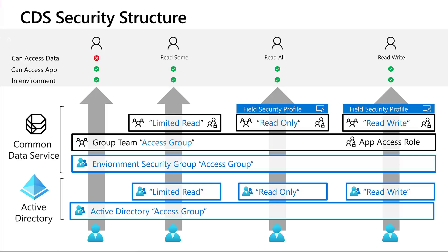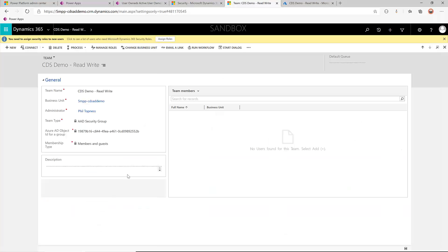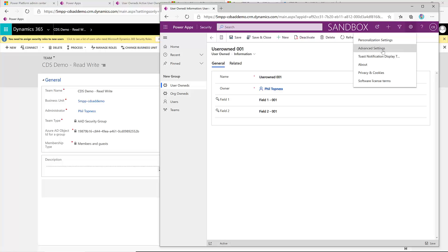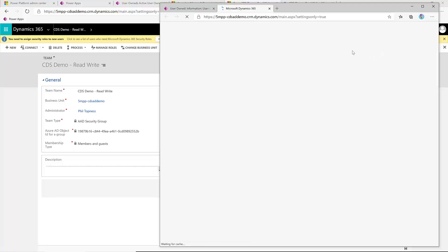By adding these members to different Azure Active Directory security groups, all that action is driven through the related group teams and their specific security roles, and in this case field security profiles also tied to those teams. This allows us to drive action on records and fields all through what's in Azure Active Directory. You can of course do the same from within CDS by creating teams directly. But for organizations that already have a process for managing Active Directory groups, this allows you to tie that management into CDS as well. One important thing: make sure your app administrators don't have access to create teams and security roles outside of this profile. We've set up a security role so the read write user can't create new roles or teams — they can only read them.